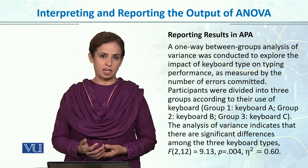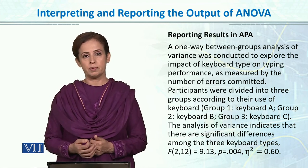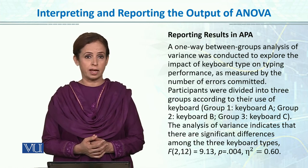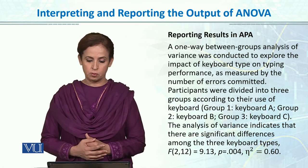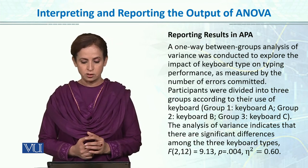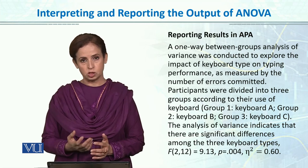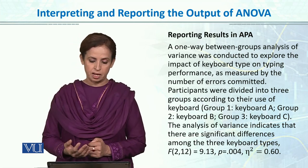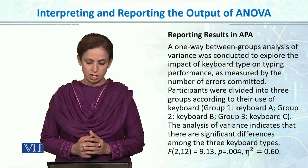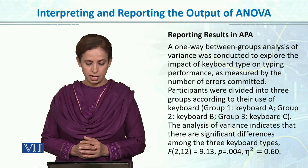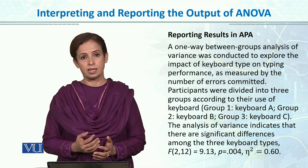When reporting results in APA, we have the ANOVA table format. A one-way between-group analysis of variance was conducted to explore the impact of keyboard type on typing performance. You write your IV, your DV, what you manipulated and what you wanted to see — typing performance as measured by the number of errors committed. Participants were divided into three groups according to their use of keyboard: Group 1 keyboard A, Group 2 keyboard B, and Group 3 keyboard C. The analysis of variance indicated that there are significant differences among the three keyboard types, then you report the F-value.